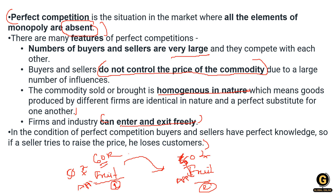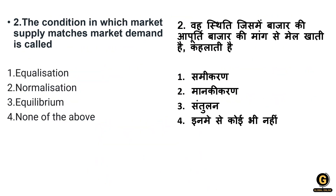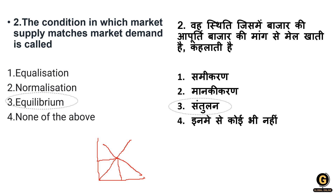The next question: the condition in which market supply matches market demand is called what? Looking at the graph where market supply matches market demand, that intersection point is called what? The options are equalization, normalization, equilibrium, and none of the above. The correct answer is option three: equilibrium. This point is the equilibrium of supply and demand of the commodity in the market.